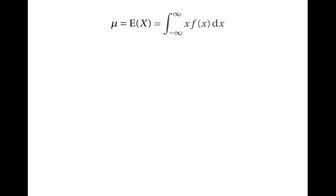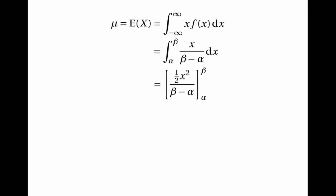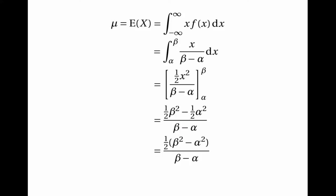You might also be expected to derive this algebraically. The mean, which is the expected value of x, is the integral of x f(x) over all possible values of x. The probability density function was just 1 over beta minus alpha between alpha and beta. So this is the integral of x times 1 over beta minus alpha evaluated between alpha and beta. When you integrate that, you get a half of x squared over beta minus alpha with limits alpha and beta, which gives a half of beta squared minus alpha squared over beta minus alpha.